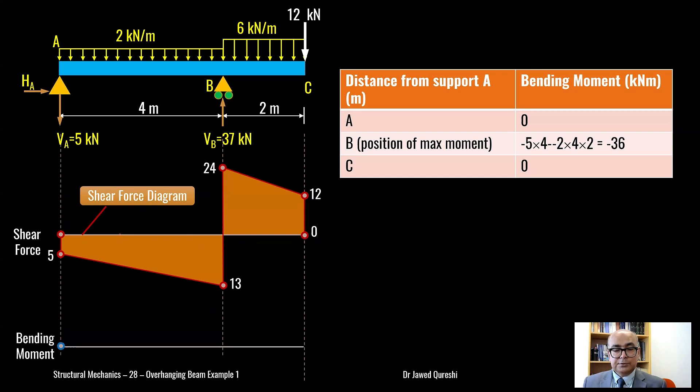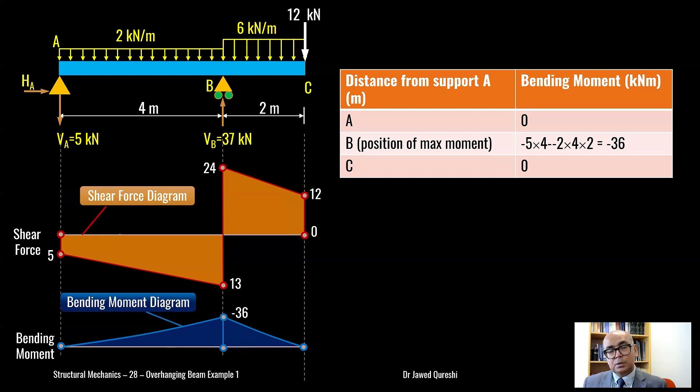Let us see how we can draw bending moment diagram. First point, we have zero and then B, we have 36. C, we have zero and then we can hatch this to make it look beautiful. This is our bending moment diagram.